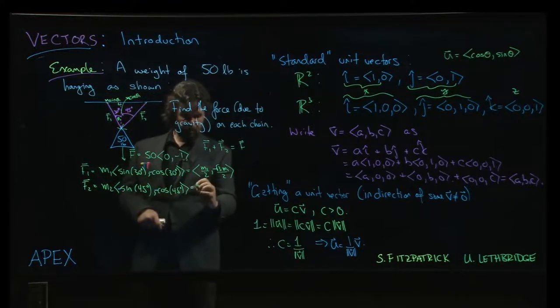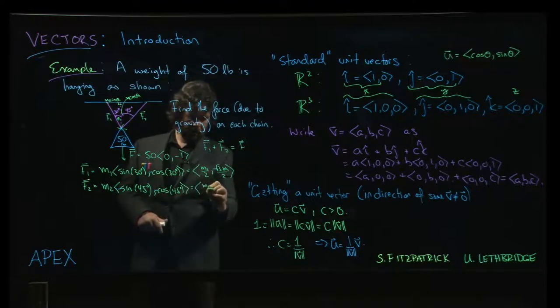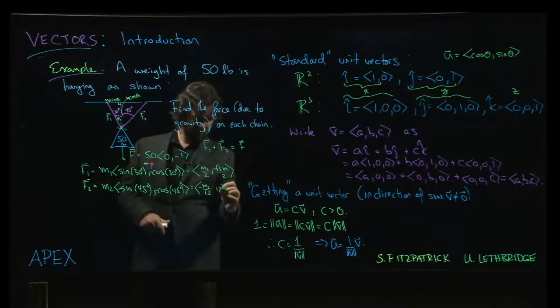F2 down and to the left, so in this case actually both components should be negative, right? So we should have in this case, so sine and cosine of 45 degrees are both 1 over root 2, so this is going to be M2 minus M2 over root 2, minus M2 over root 2, okay?